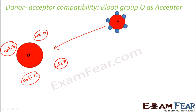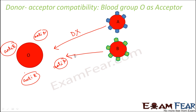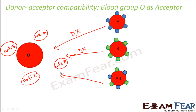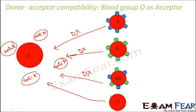Now what will happen if A wants to donate? If A tries to donate, the antibodies A will attack the antigen A and spoil it, so A cannot donate. If it is B, B also cannot donate because the antibodies B will attack the antigens B. AB also cannot donate because AB has both A and B antigens and these antibodies will attack them. The only one which can donate is O, because O doesn't have any antigens, so the antibodies cannot attack anything.